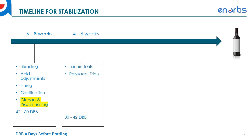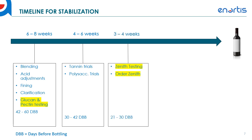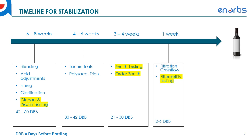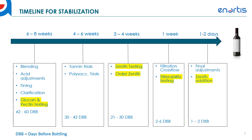Four to six weeks out is when you might be doing tannin trials or polysaccharide trials to adjust the mouthfeel or body of the wine. Three to four weeks out is when you'll start doing Zenith testing — it's super easy and will ensure compatibility of your wine with Zenith. You'll order your Zenith at this point. Then about one week out you'll do filtration through your crossflow or pad filters, followed by filterability testing to ensure the wine won't have difficulty with membrane filtration prior to bottling. Finally, one to two days out you'll make final adjustments and your Zenith addition just before bottling.